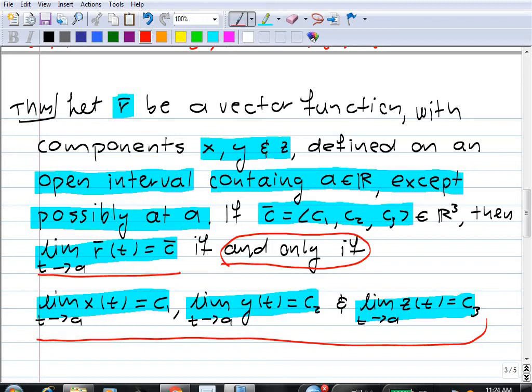And this is if and only if, which means that two things are exactly the same. So saying limit t goes to a of r(t) is vector c is exactly the same as saying that the three component limits behave in this way: limit x(t) is c₁, limit y(t) is c₂ and limit z(t) is c₃. So that means whenever we have to deal with the limit of a vector function, we can take it down to the level of the components. Which means we can use everything we know about limits of R to R functions. These are all functions R to R. We can use everything we know about limits of functions from R to R and apply them to limits of vector functions by going to the components. And we'll see a couple of demonstrations of this.